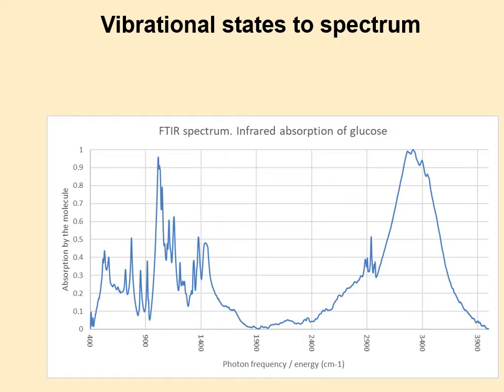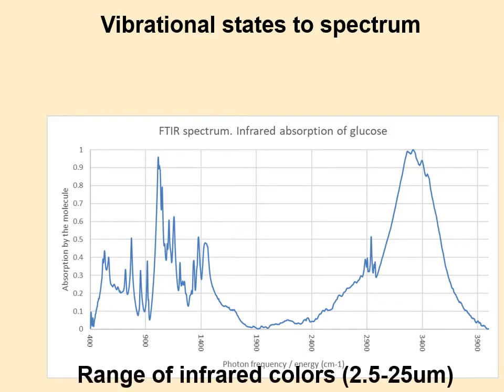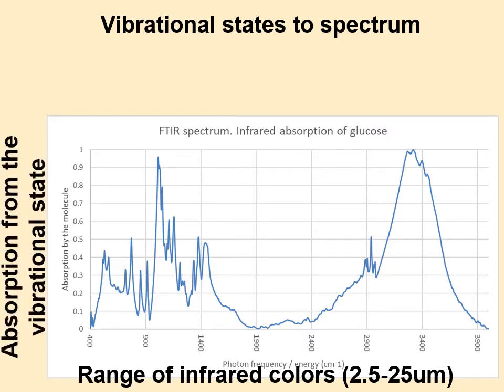Here we have an infrared spectrum from an FTIR — Fourier transform infrared — which is how the optics are laid out to do this. On the x-axis is the range of colors sent in, all infrared wavelengths we can't see, all relatively low energy per photon. On the y-axis, this is absorption — how much of the photons got absorbed and never made it to the detector.